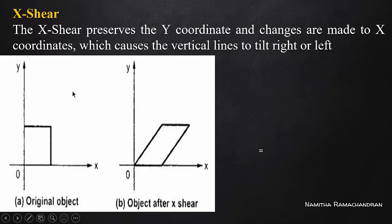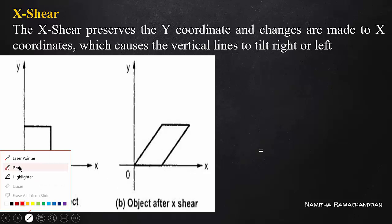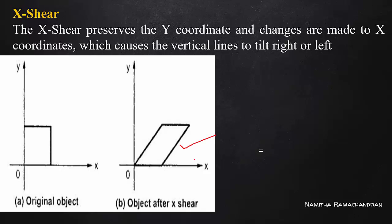Because of the X-shear, we have to preserve the y-value and we have to tilt the x-value. We have to change the x-value. The change is in x, not in y. The x value is changing when it is dependent on y.